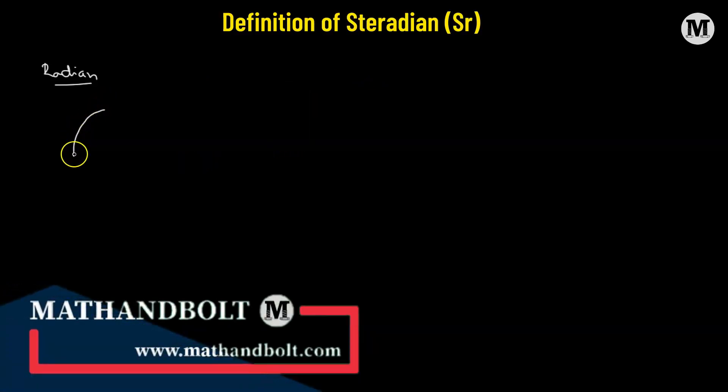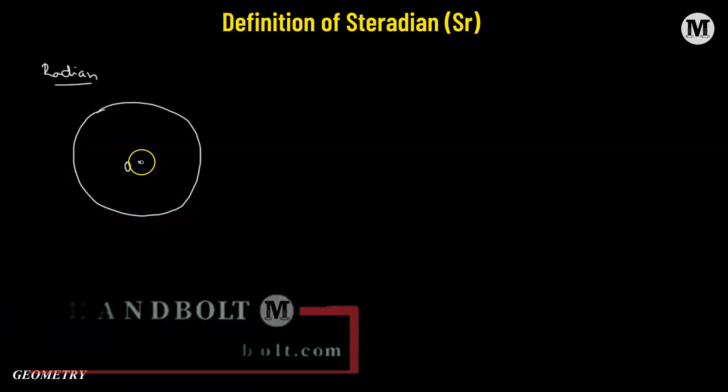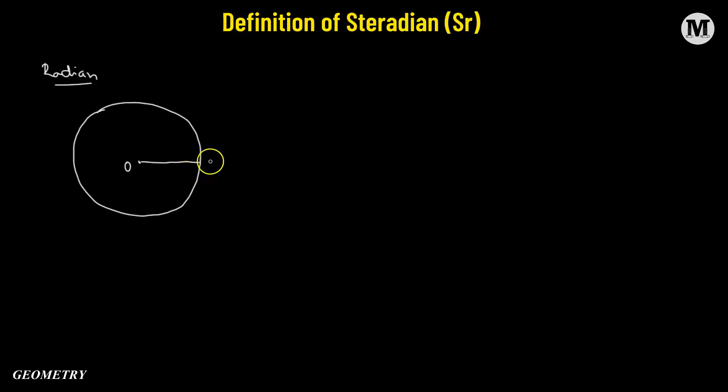Let's say we have a circle with a center O. Let's say we have the radius OA having one unit. Now, let's say we have a subtended angle theta at the center O in such a fashion that it gives us a new arc AB, and the length of this arc AB, let's say this is also one unit.